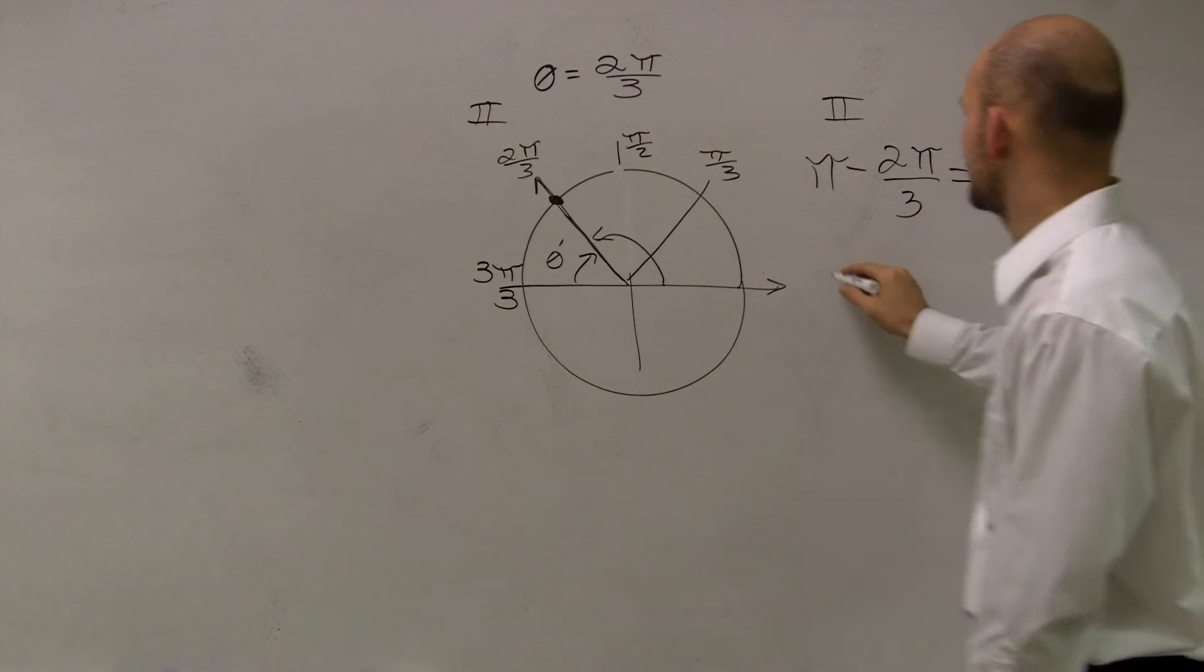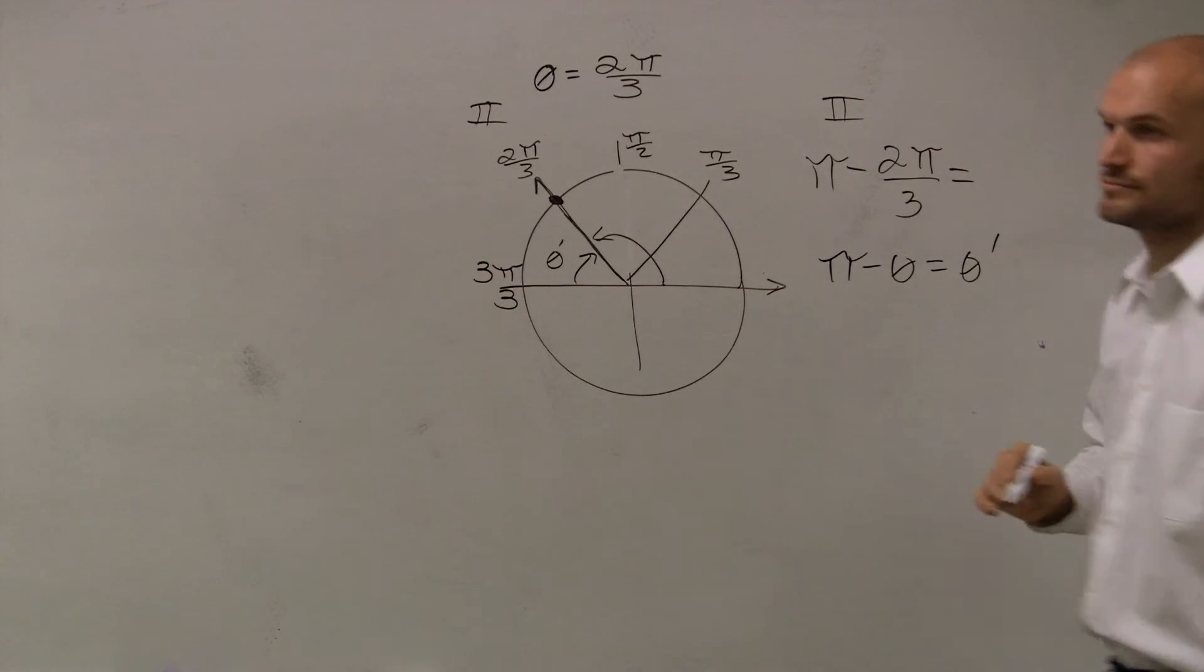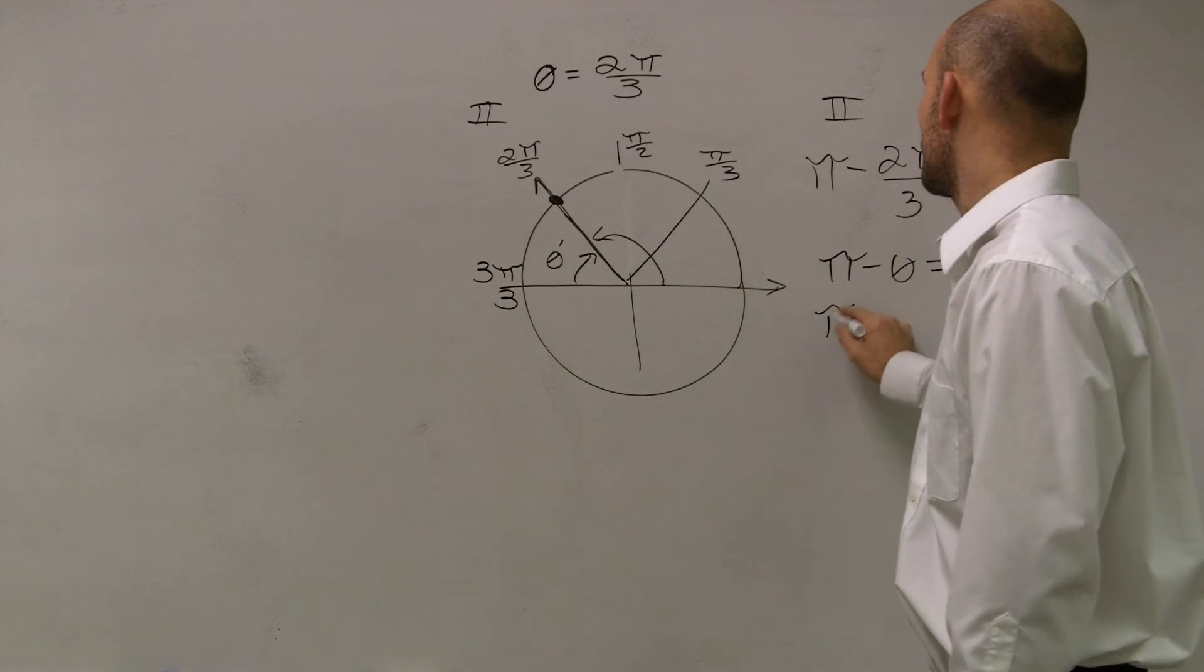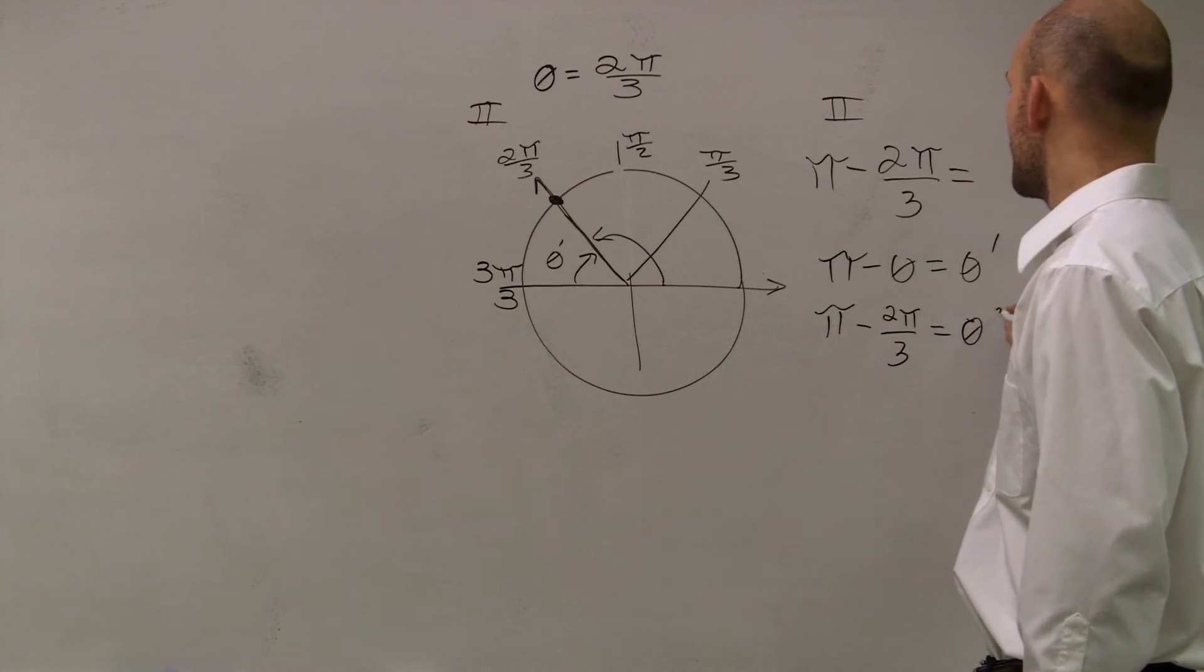So I'm going to have 2π over 3. It looks like this: π minus θ equals θ prime. So you take 180 minus your angle. This is when it's in quadrant 2, and you're going to get θ prime, which is your reference angle. So π minus 2π over 3 equals θ prime.